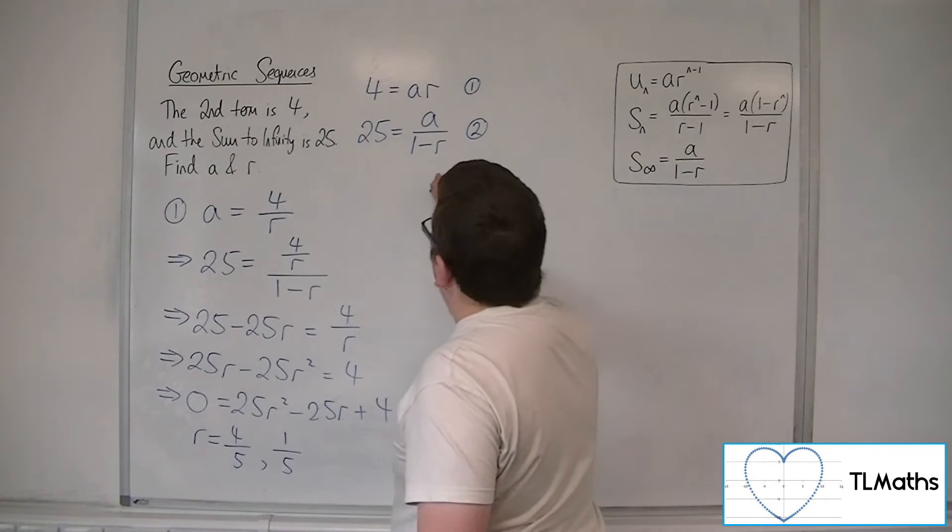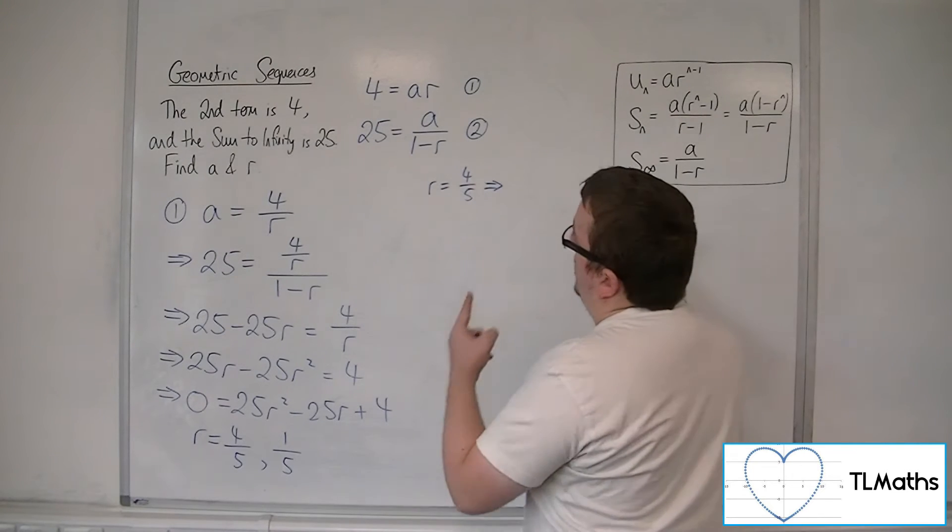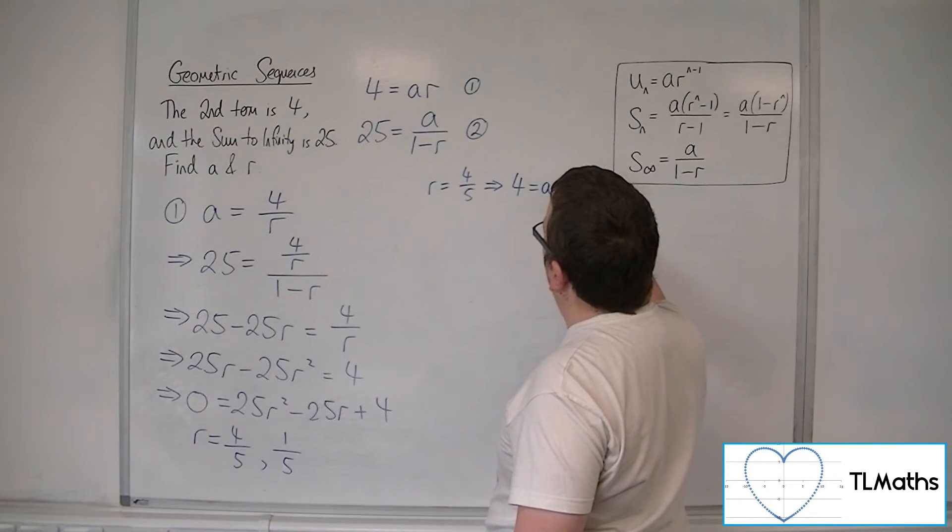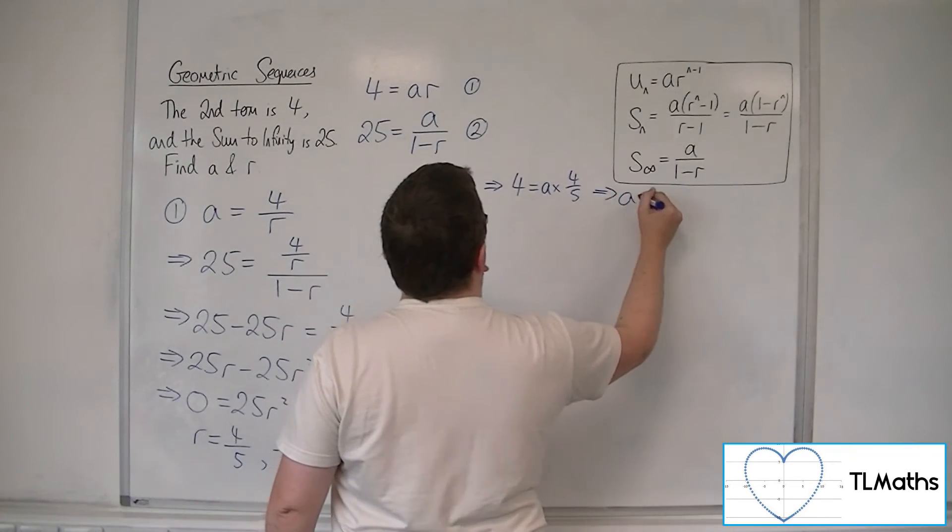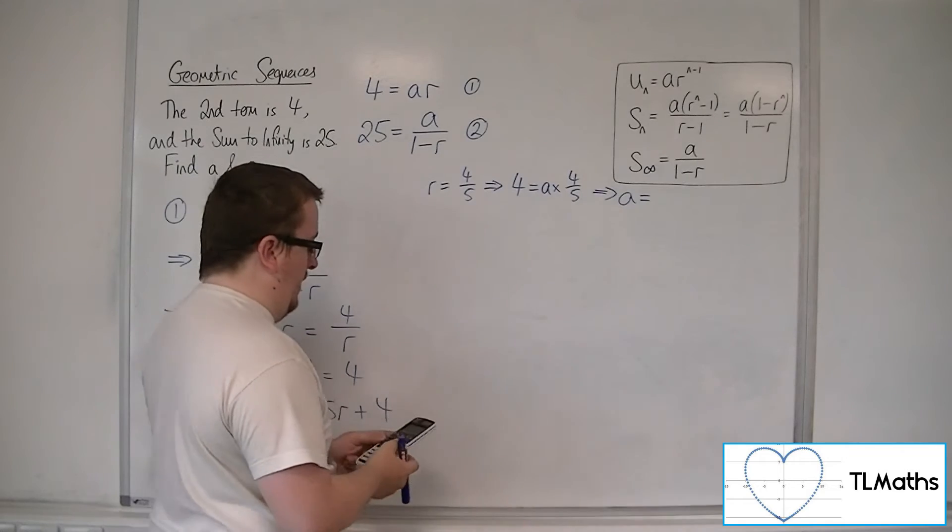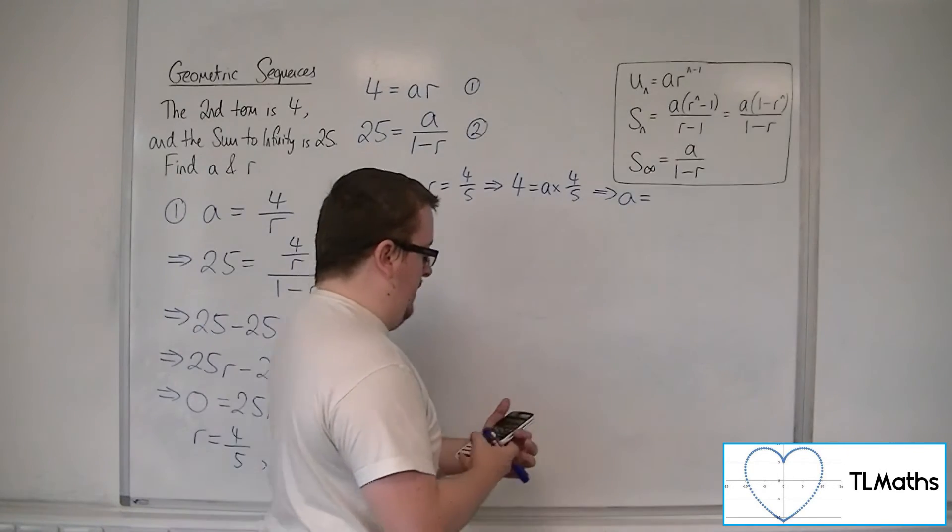So if r is 4 fifths, I can substitute that into equation number 1 to get 4 is equal to a times 4 fifths. Which means that a, if we do 4 divided by 4 fifths, it should be 5.